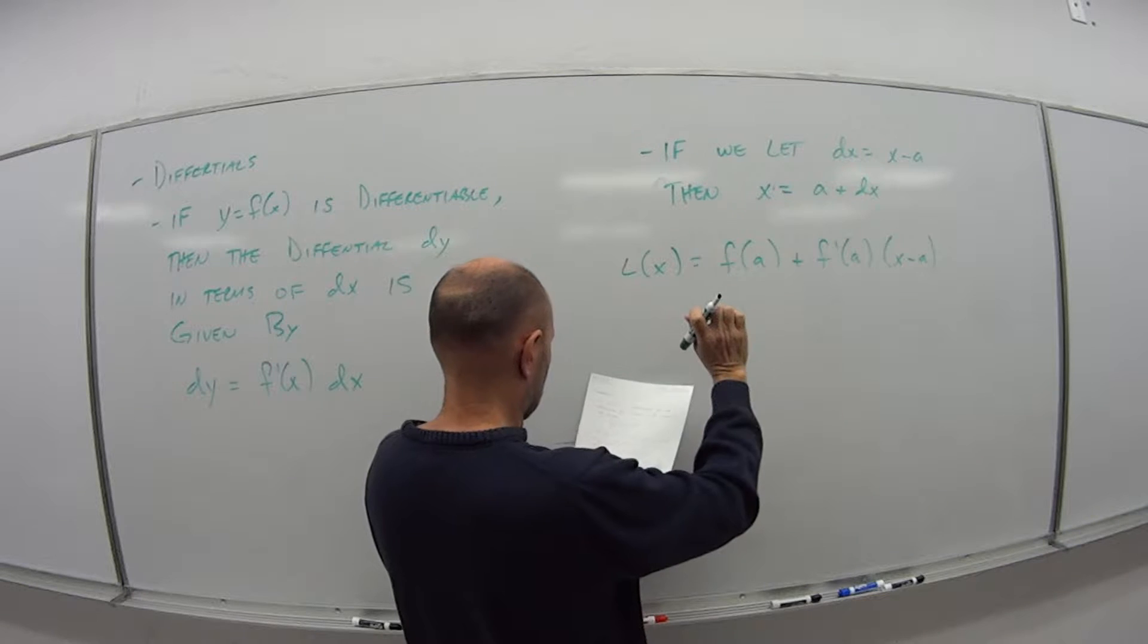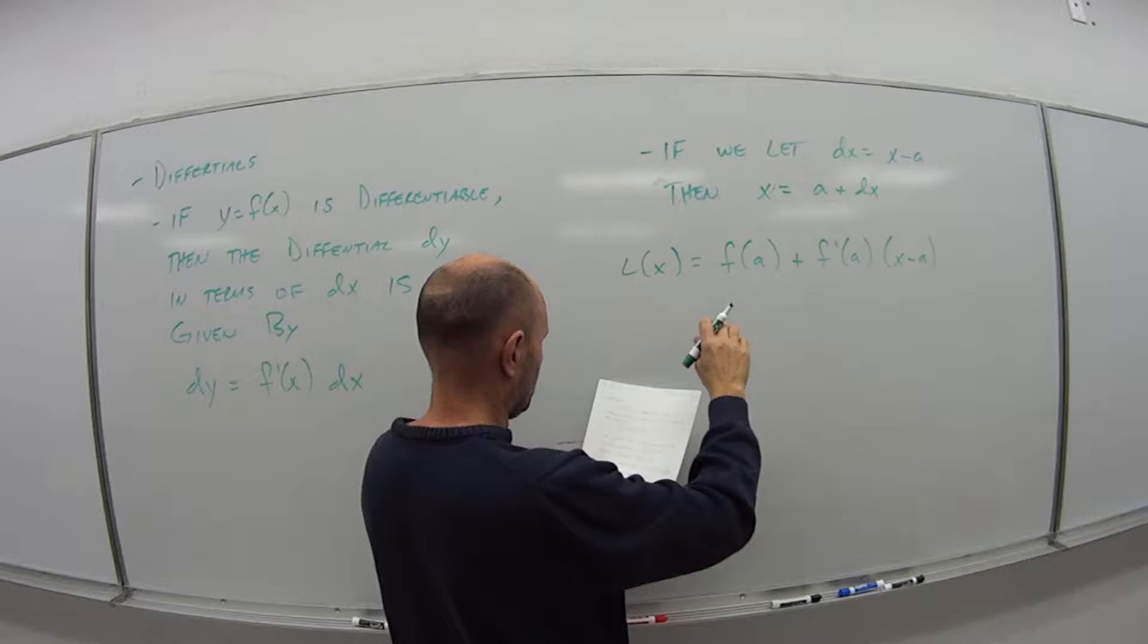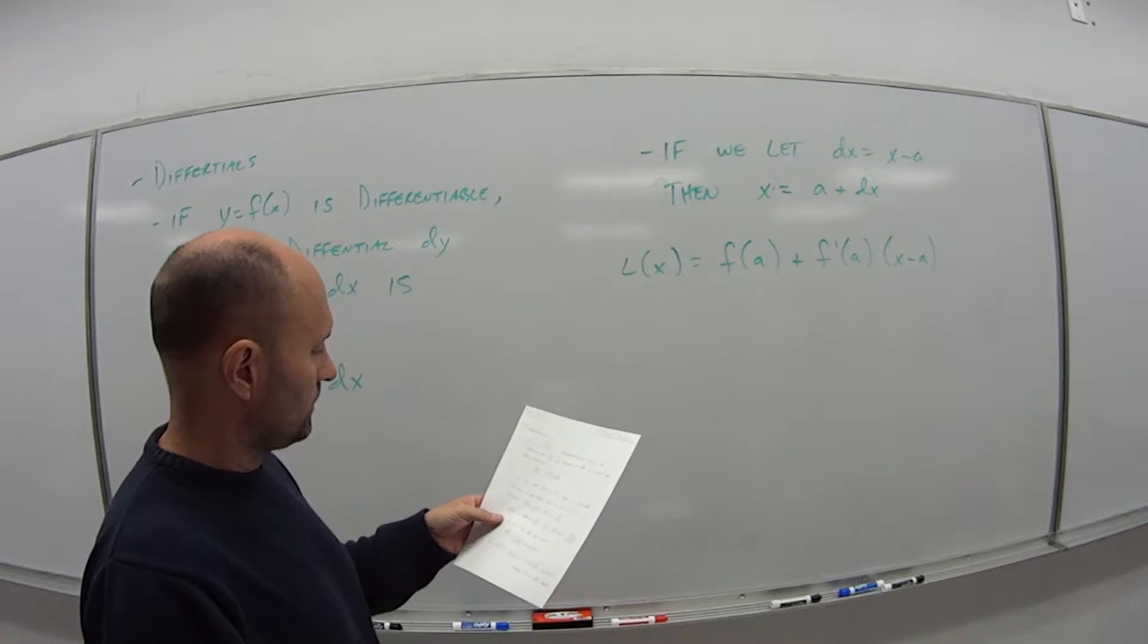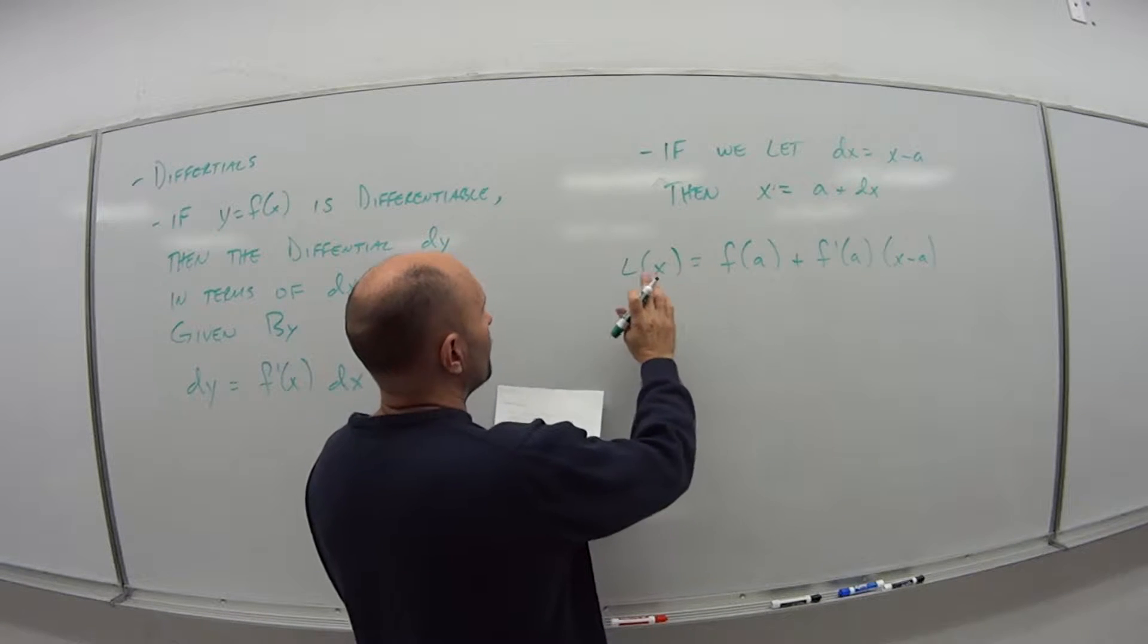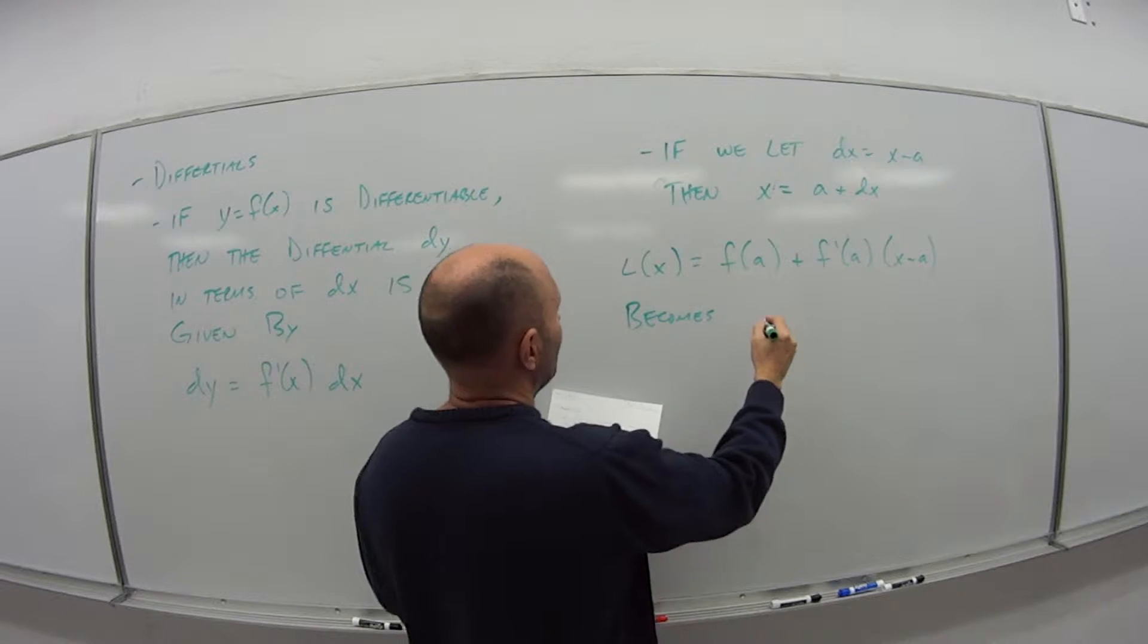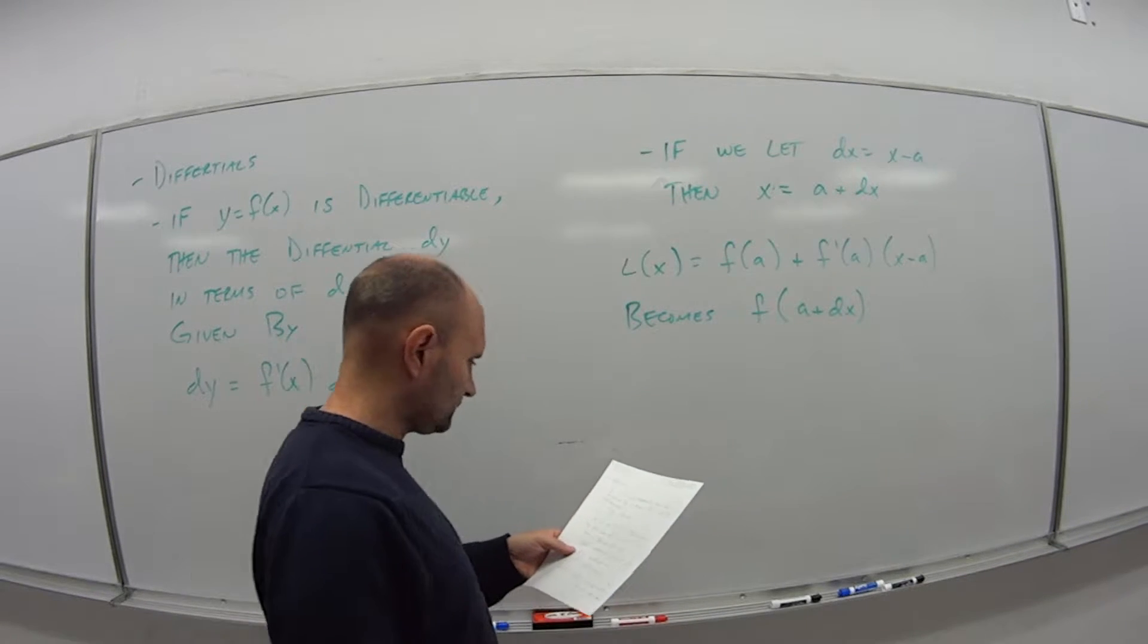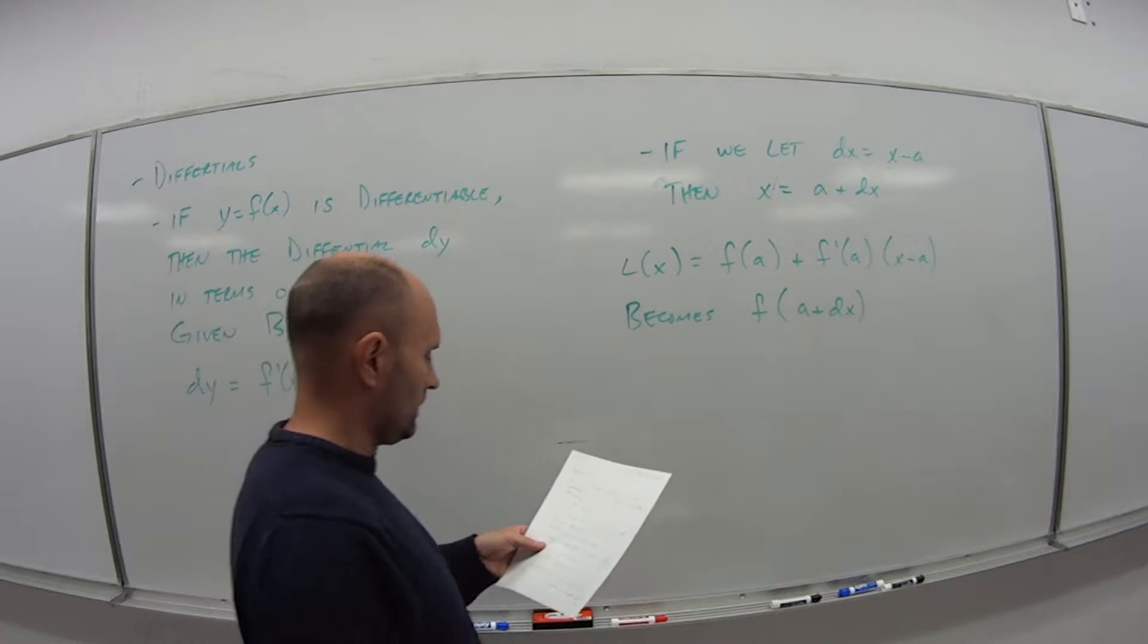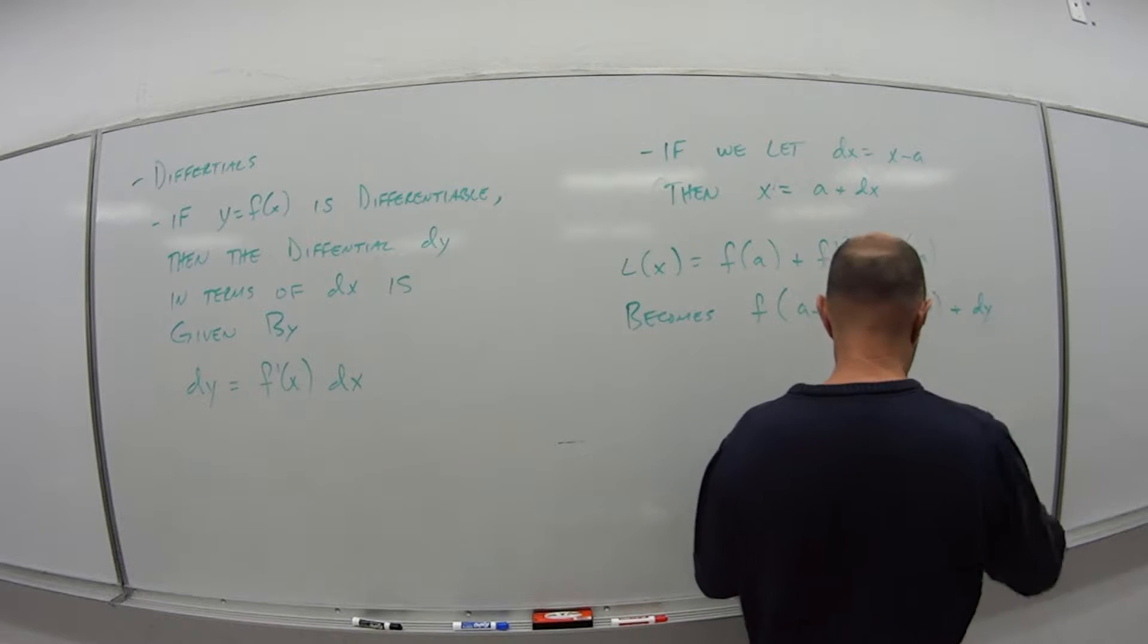So this whole thing becomes what? So our approximation here then becomes f of a plus dx is equal to f of a plus dy.